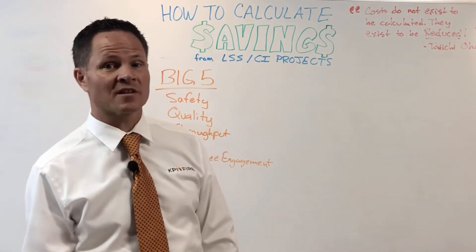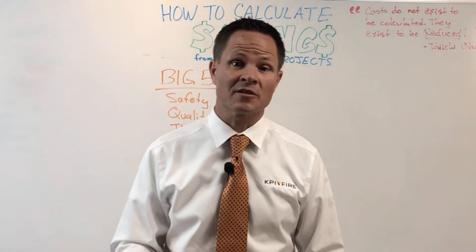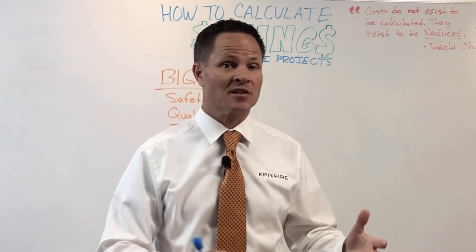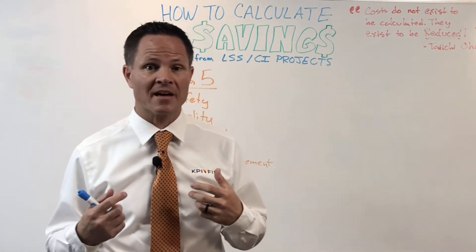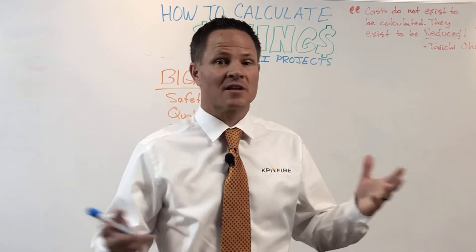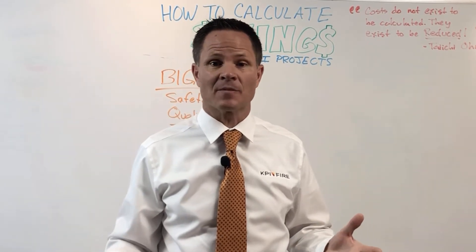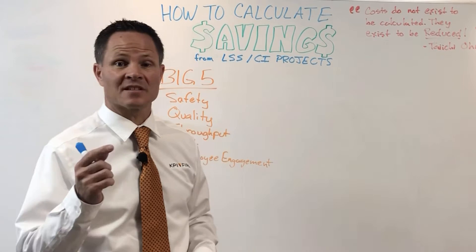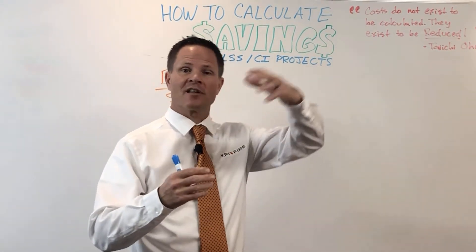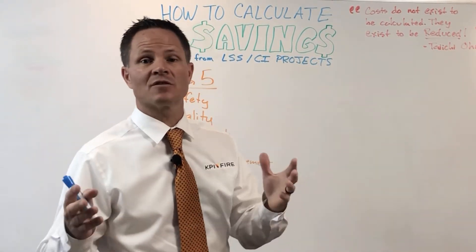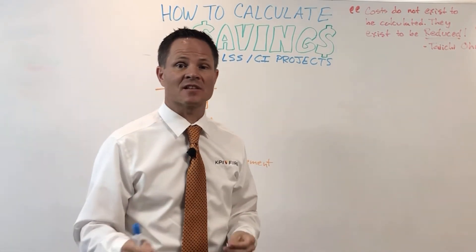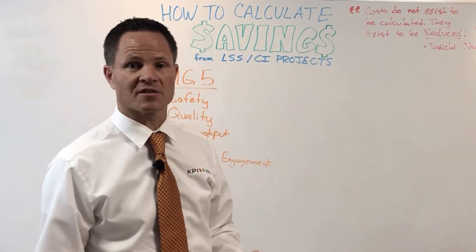This is one of the key failure points for companies doing continuous improvement: they don't track the benefits. So when it's time for the company to pull back, the first thing to go is the continuous improvement work because they think they didn't get much value from it. I'm going to give you the tools you need to track your savings consistently for all the continuous improvement projects you're doing.